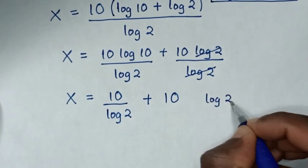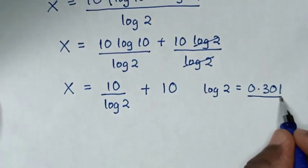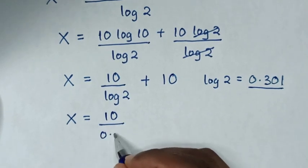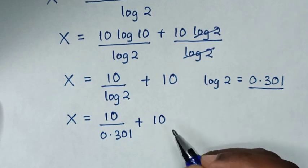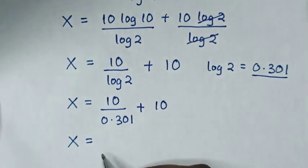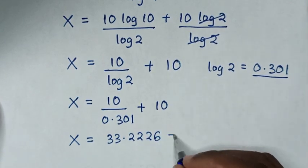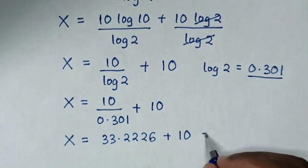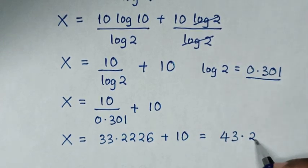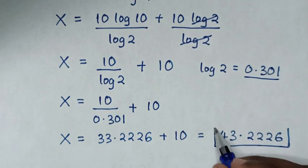Log of 2 is equal to 0.301, so we substitute this 0.301 in here. Then it will be x is equal to 10 over 0.301, then plus 10. Then it will be x is equal to 10 divided by 0.301, which is 33.2226, then plus 10, so it will be equal to 43.2226. So this is the final answer for the value of x in this problem.